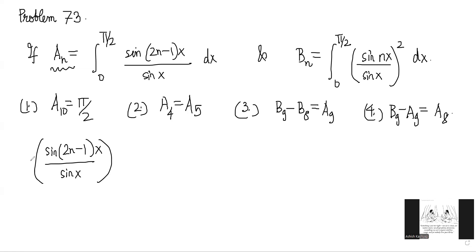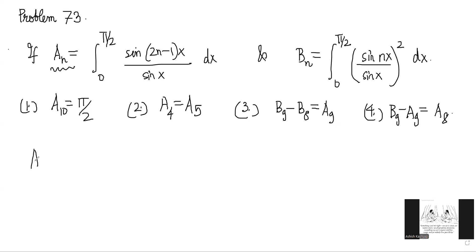So what we do here is a simple trick: we try to find the difference of two successive integrals. I will apply this same trick to both of these. So I will try to find aₙ₊₁ minus aₙ. Why the difference? Because if you take the difference, you will be able to subtract the integrals, and you get something like 0 to π/2.